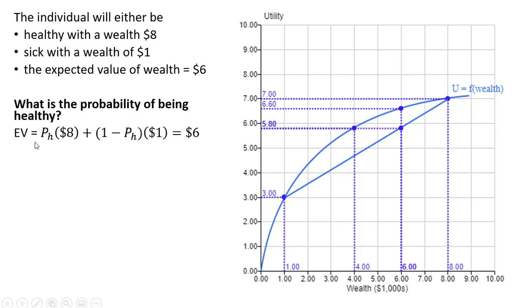So setting this expected value formula equal to $6, we're going to solve for the probability of being healthy, P subscript H. Doing the math here, subtracting 1 from both sides and then dividing through by 7, we have the probability of being healthy. And to get the probability of being sick, it's just 1 minus the probability of being healthy, or 2 sevenths, where the probabilities sum to 1.